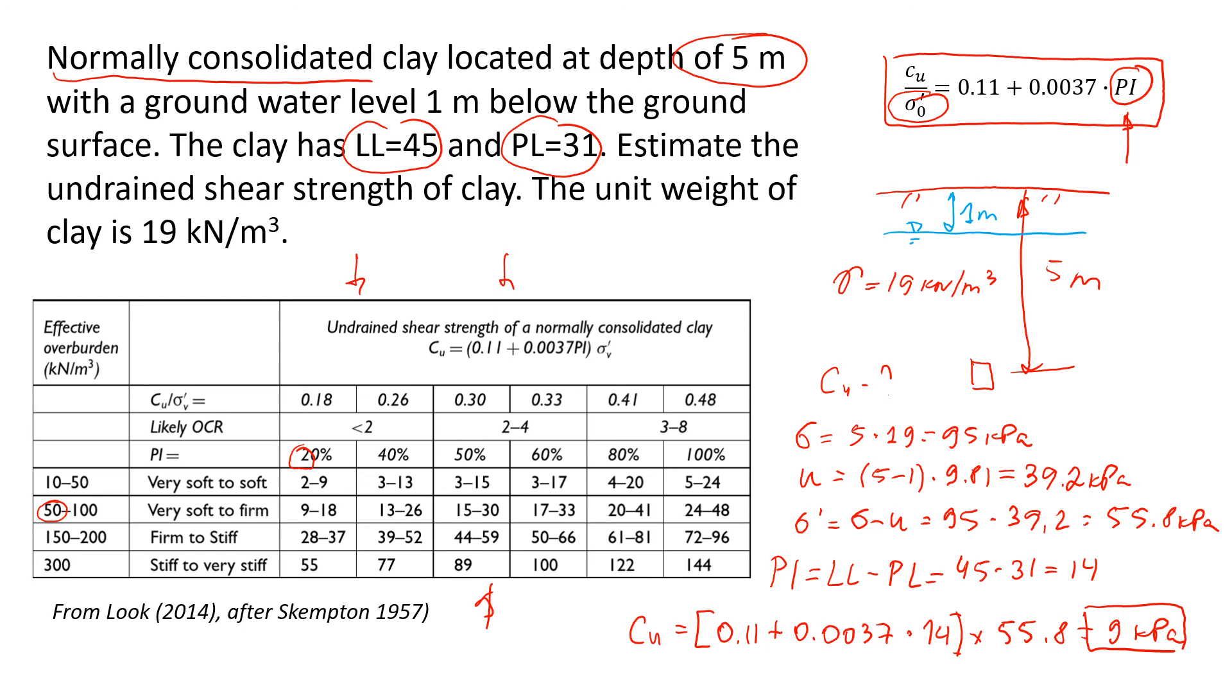So it's going to be from 9 to 18 and probably more to the lowest value which is 9. So that actually gives a good correlation with the table presented here.